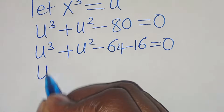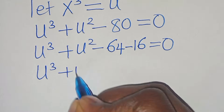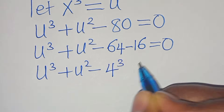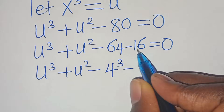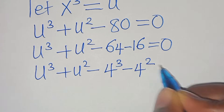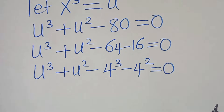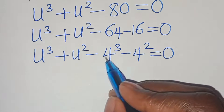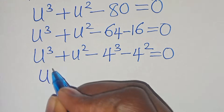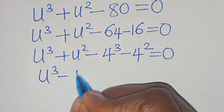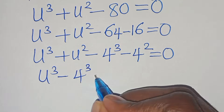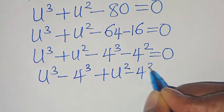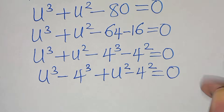This is the same as u³ plus u² minus 64 — which is 4³ — minus 16 — which is 4². We then group: u³ minus 4³, plus u² minus 4², all equal to 0.